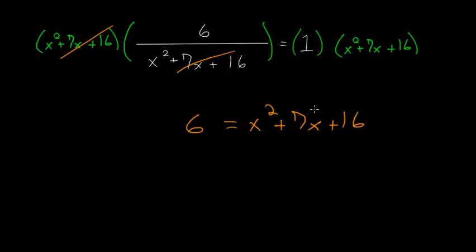And now the way to solve quadratics is usually to set one side of the equation equal to 0. So if we subtract 6 from each side, and after subtracting 6 from each side, we'll be left with 0 equals x squared plus 7x plus 10.